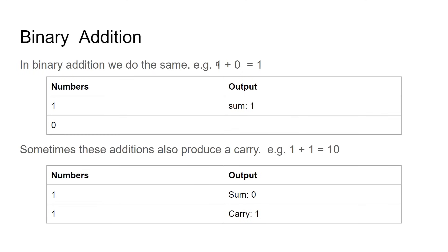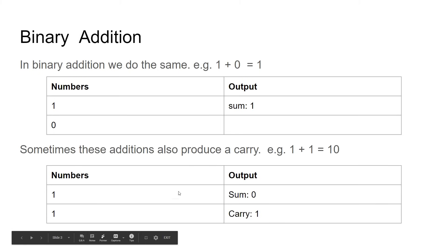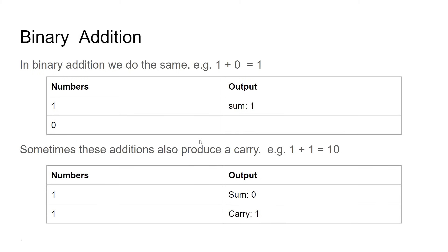If you get 1 plus 0 in binary then you just have an output of 1 — a sum of 1. But just like the bigger numbers in decimal, if you have a 1 and a 1, well that's not going to fit all into one column. So what we do is we set the sum as 0 and carry over a 1 onto the next column.